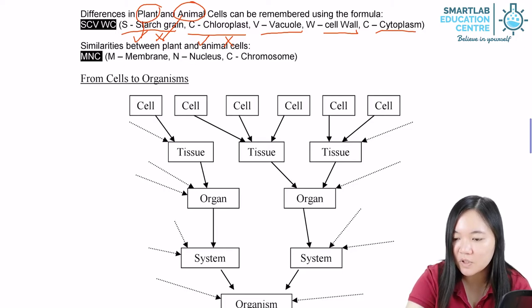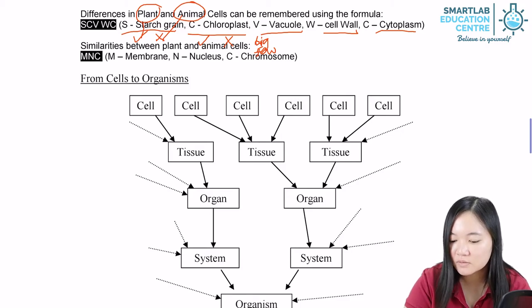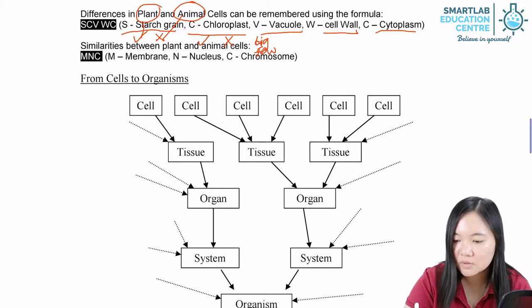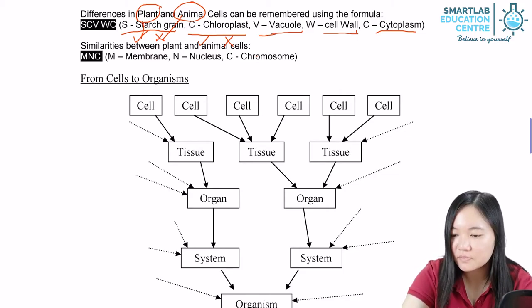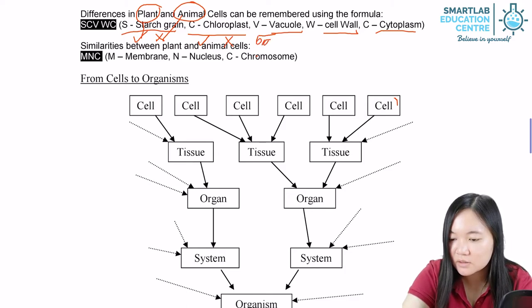Vacuoles. Plant cells have large vacuoles, one or a few. So basically, plant vacuoles are large, and there are a few. For animal, they are very small, but many.